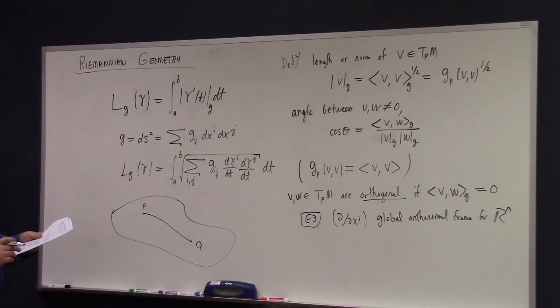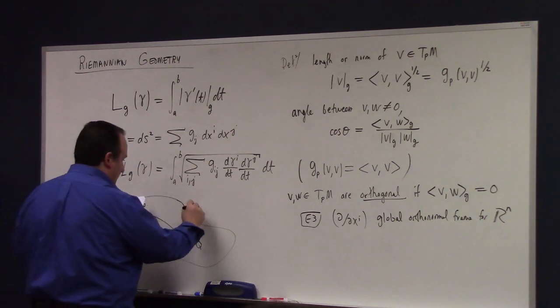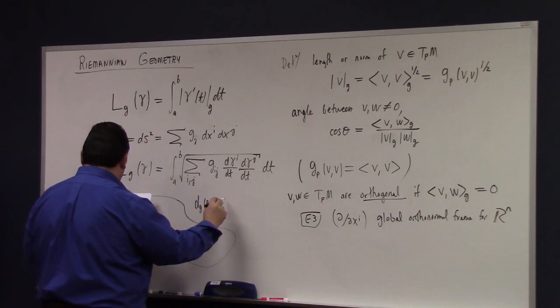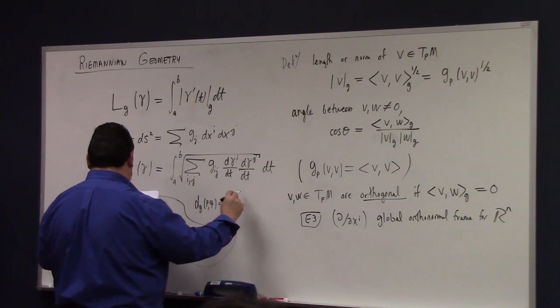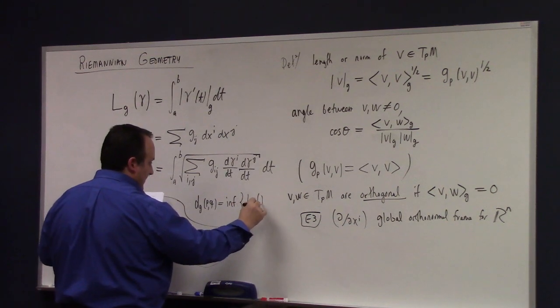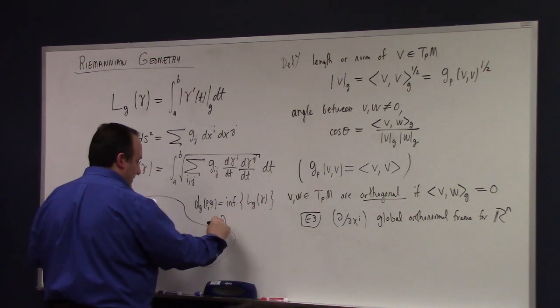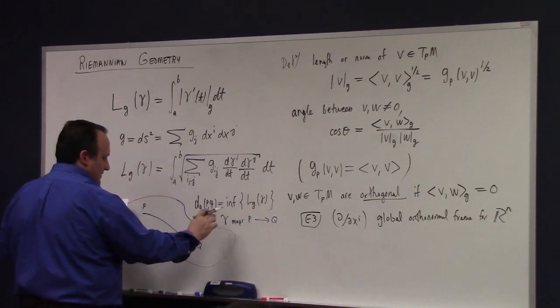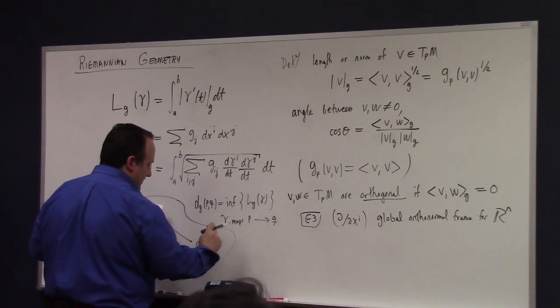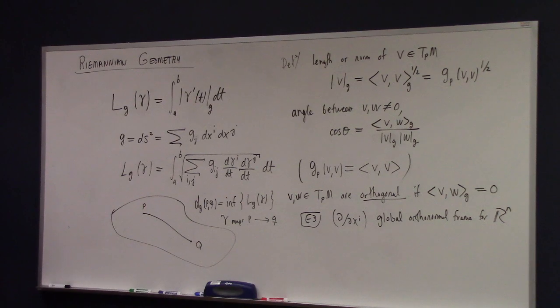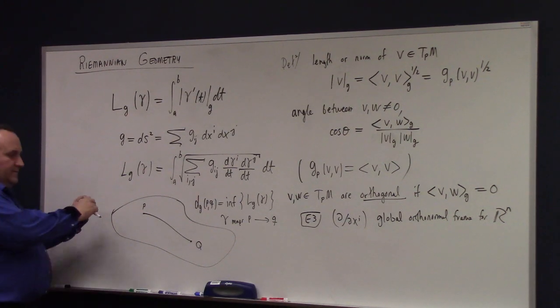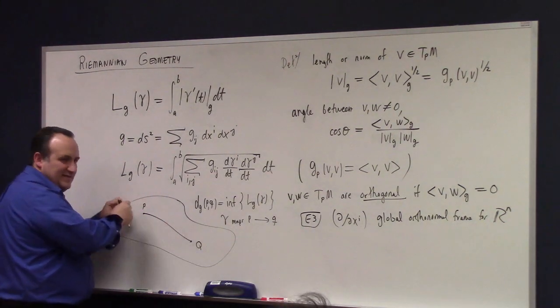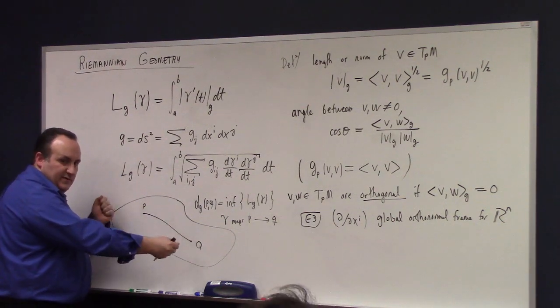This is exactly the arc length formula. If you, instead of putting, if you put g bar there, right, it becomes the stupid arc length formula. That's the Euclidean distance. But this calculates the distance between points. So if you're on the manifold, and you've got a point p, and you've got a point q, right, if you've got a point p and a point q, then you can define the distance from p to q.